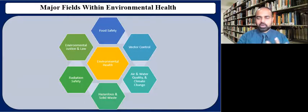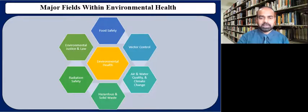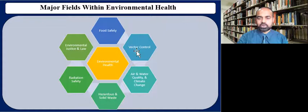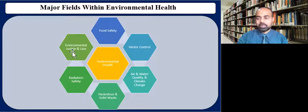By going over all of these definitions, we can identify the major fields where environmental health professionals operate. The impact of mankind continuously threatens the quality of our air, water, land, and food supply. Within the discipline of environmental health, major fields include food safety, vector control, air and water quality, climate change, hazardous and solid waste, radiation safety, and environmental justice and law, to name a few.